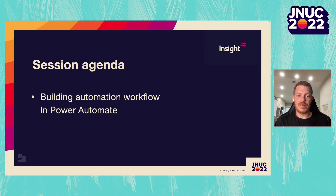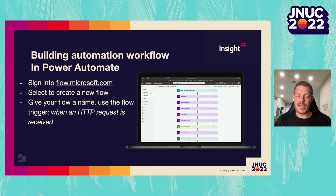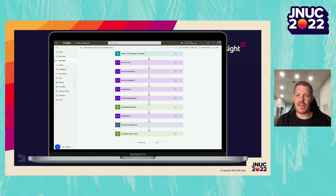So let's talk about building this automation workflow within Power Automate. On the right-hand side of your screen, we have what this completed workflow looks like within Microsoft Power Automate. First, we want to sign into flow.microsoft.com. We want to create a new flow, give this flow a name, and we want to make sure that we use our HTTP request received trigger. We'll go through each one of these steps to see how this flow is built.